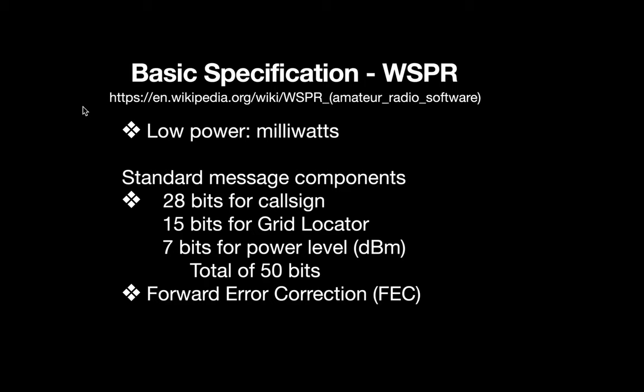The message that's sent is a call sign, grid locator, and power level, and you can see how many bits are reserved for those. You might notice that there doesn't seem to be enough bits for those things in standard encoding. So there are specialty ways of creating a special encoded package of these bits to contain all that information. The package also includes forward error correction. The beauty of that is you can lose almost half the signal — if the ionosphere is turbulent, if there's noise, or especially static crashes from lightning — and you'll still be able to decode the message.